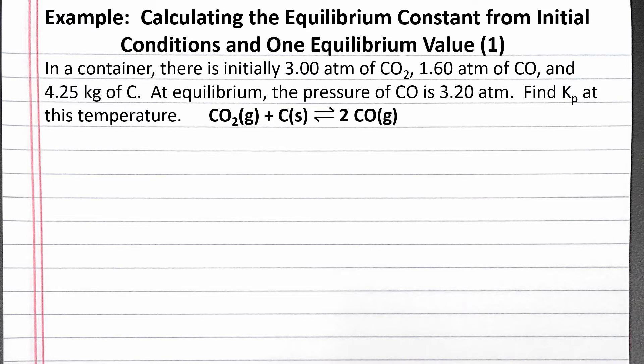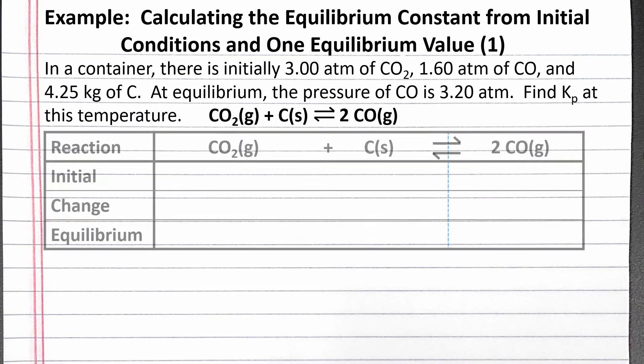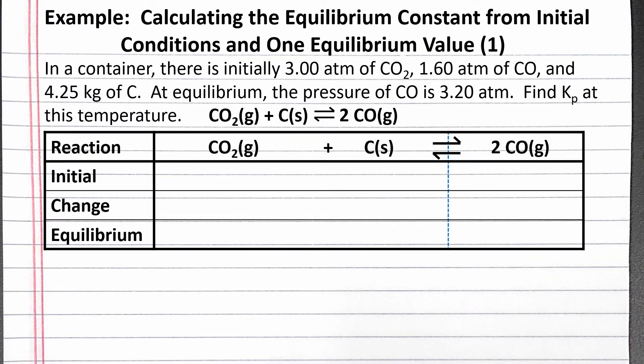We can start by creating a RICE table, where the reaction is at the top, the second row is the initial pressures in atmospheres, the third row is the change, and the fourth row is the equilibrium pressures.